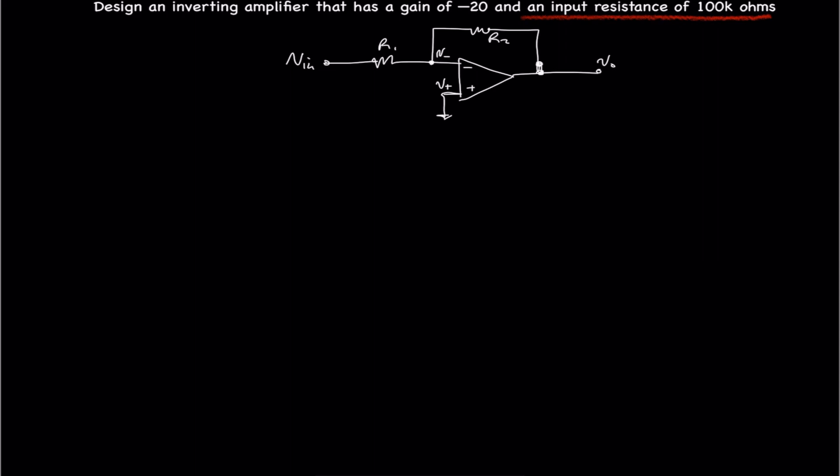So we know that our input resistance, in this case, for a non-inverting amplifier, it is infinity. But in this case, it's finite. And we shall find that out. So our input resistance is V in divided by I in.